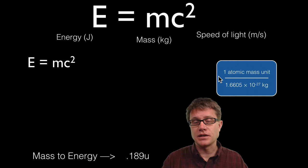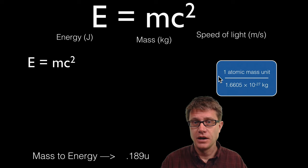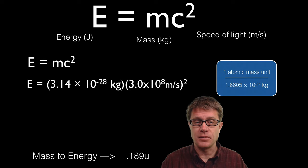And so we have got a conversion. One atomic mass unit equals 1.6605 × 10⁻²⁷ kilograms. And so I am going to have to use that to figure out my mass. So I have converted it to kilograms right here.